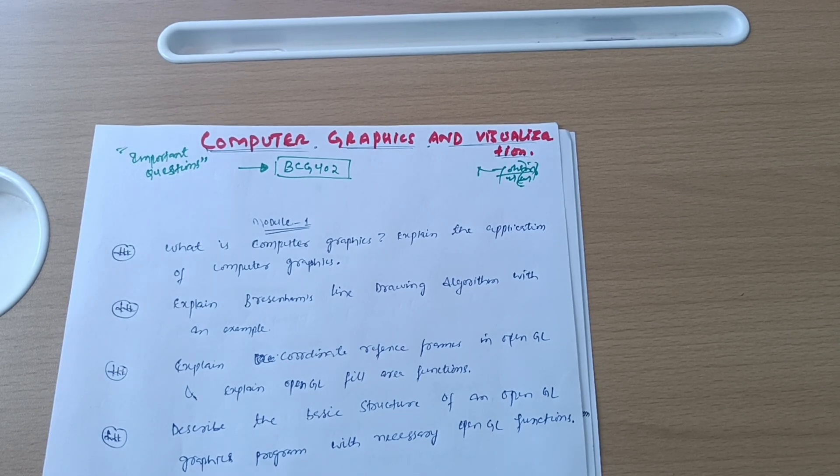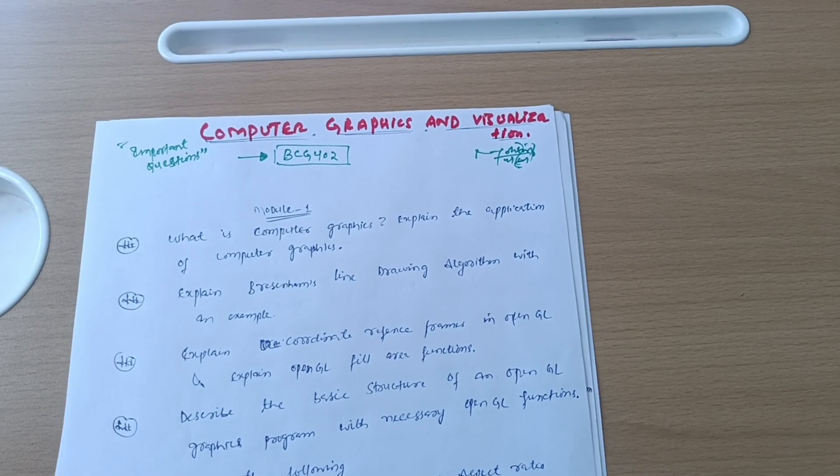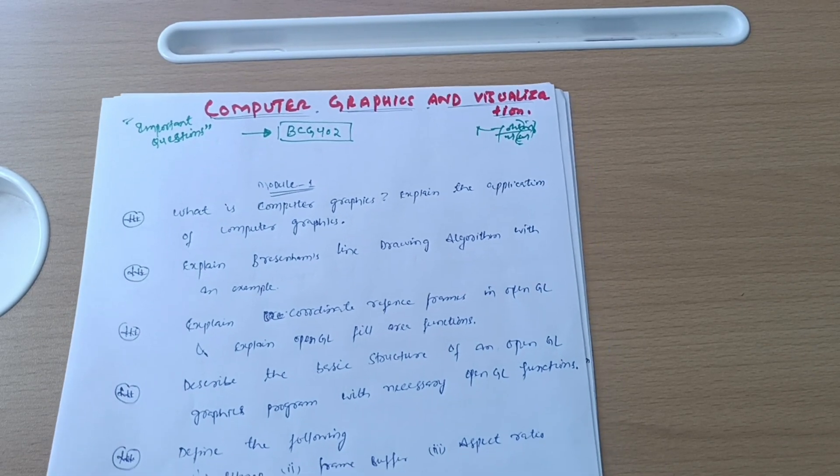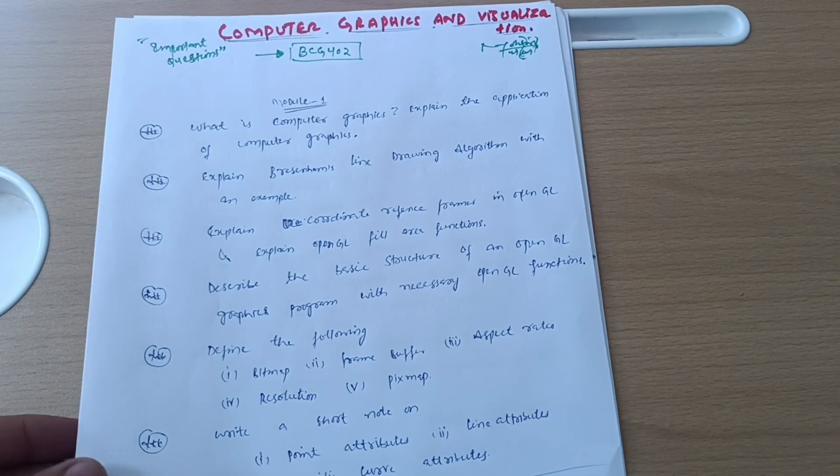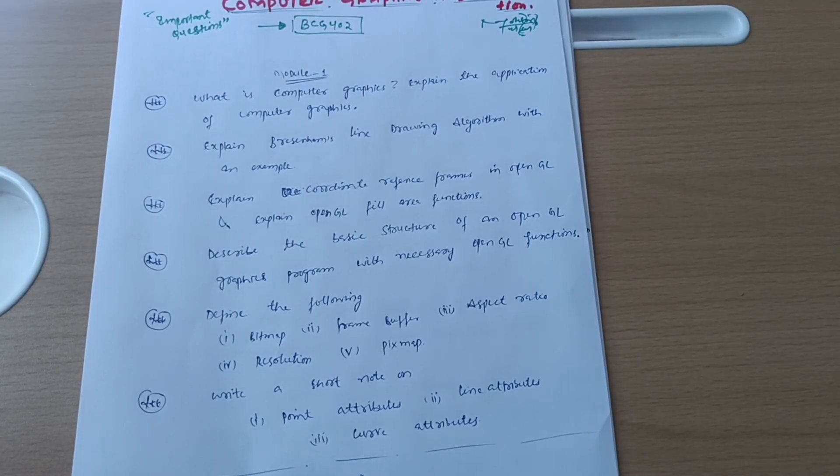Whatever questions are mentioned in this passing package are shown here. If you want to take screenshots of these important questions, you can do so if you're unable to get the link. This is Module 1, with six questions visible that you can screenshot.